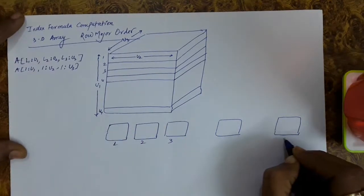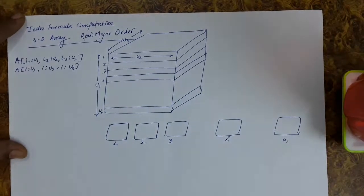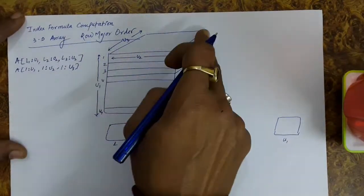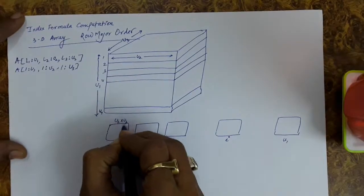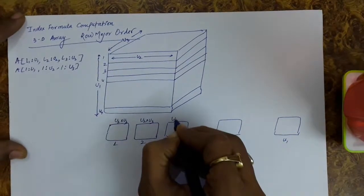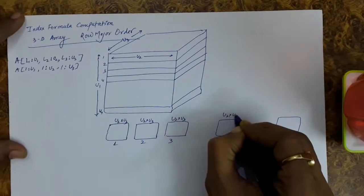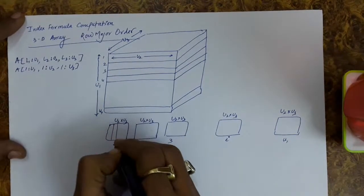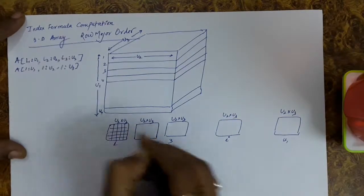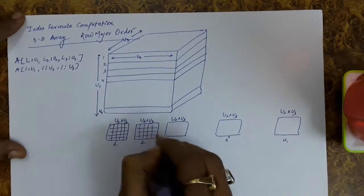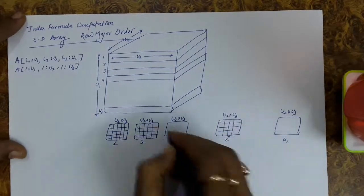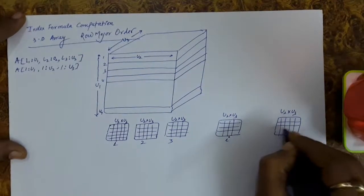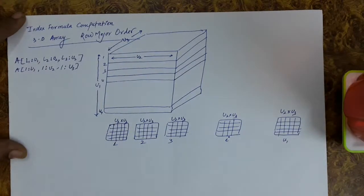Let's say this is the i-th slice. Every slice is of size u2 × u3. This slice is of size u2 u3, this one is also u2 u3, and so on — each slice is of size u2 u3. We can think of each slice as a 2D array. So we have now realized a 3D array in the form of u1 2D arrays, where every 2D array is of size u2 × u3.